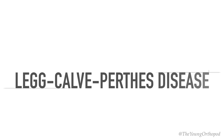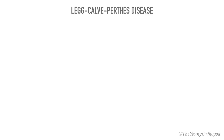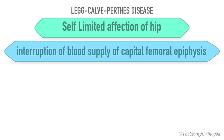Hello and welcome to the Young Orthopod. Today we will discuss the pathogenesis of Legg-Calvé-Perthes disease. Perthes disease is a self-limited affection of the hip in young children, characterized by interruption of blood supply of the femoral head leading to partial or complete avascular necrosis, followed by subchondral fracture, revascularization, and repair of the dead bone.